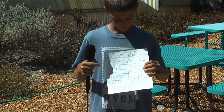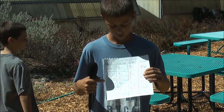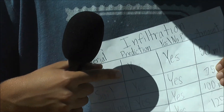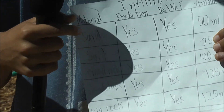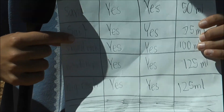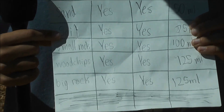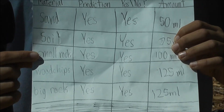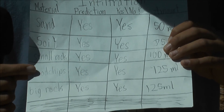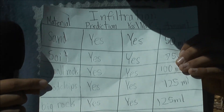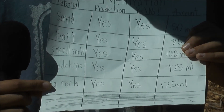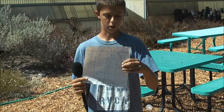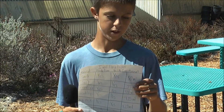These are the results of the infiltrated water. For sand, we made a prediction that it would go through and it did — 50 milliliters of water went through. For the soil, 75 milliliters went through. For the small rock, 100 milliliters. For the wood chips, 125 milliliters. And for the big rock, also 125 milliliters. Those are the results of the infiltrated water through the material.